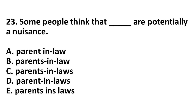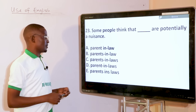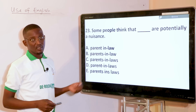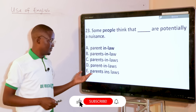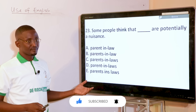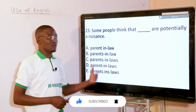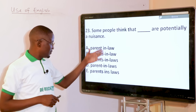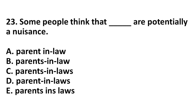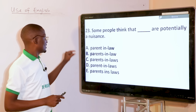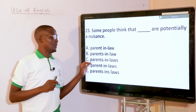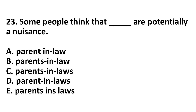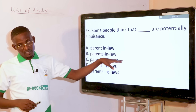Some people think that dash are potentially a nuisance. We are talking about the pluralization of compound nouns — specifically hyphenated compound nouns. The word is parent-in-law. When pluralizing these, you pluralize the root word. The root word here is parent, so parent should take the S — parents-in-law — rather than parent-in-laws. The parent is the root word and should take the S, not law.